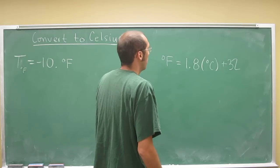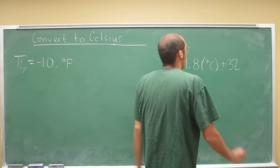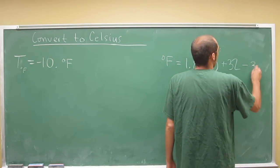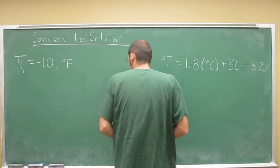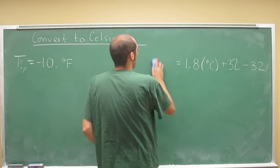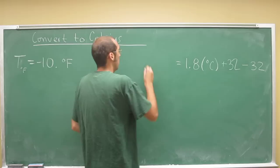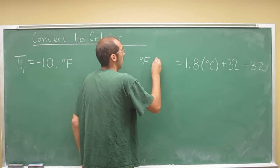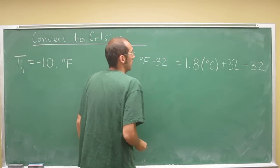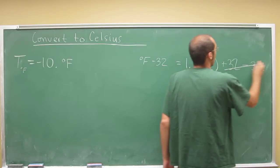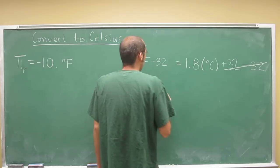So the first thing we're going to do, order of operations, is subtract 32 from both sides. So minus 32, minus 32. So when we do that, that cancels that out. And so what do we have now?